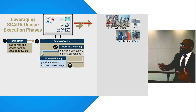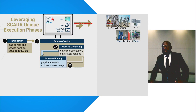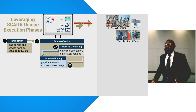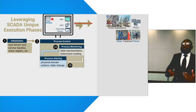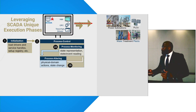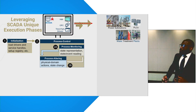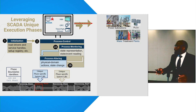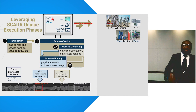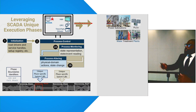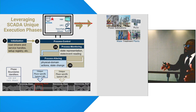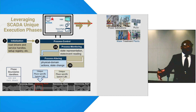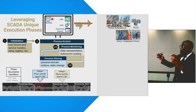In the process monitoring phase, SCADA reads physical measurements from the plant, updates the state in its memory, and checks whether it needs to respond to events. If it has to respond, it goes into the process altering phase, where it executes physical domain functions and updates the physical state. Rather than considering SCADA as one monolithic line of execution, we specialize its operations into unique execution phases — which is how SCADA works regardless of what the physical process is.